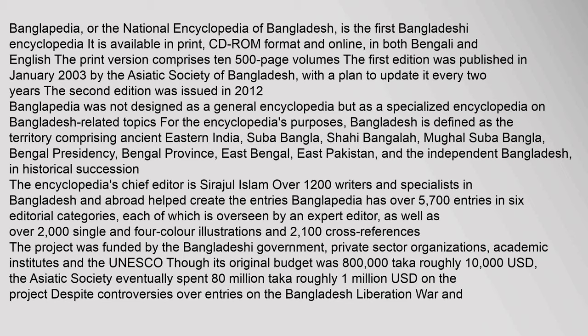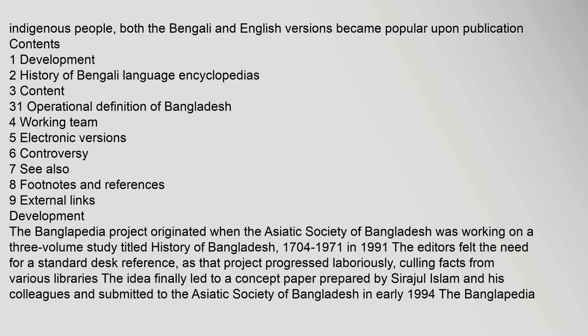Over 1,200 writers and specialists in Bangladesh and abroad helped create the entries. Banglopedia has over 5,700 entries in six editorial categories, each overseen by an expert editor, as well as over 2,000 single and four-color illustrations and 2,100 cross-references. The project was funded by the Bangladeshi government, private sector organizations, academic institutes, and UNESCO. Though its original budget was 800,000 taka (roughly $10,000 USD), the Asiatic Society eventually spent 80 million taka (roughly $1 million USD), despite controversies over entries on the Bangladesh Liberation War and indigenous people.